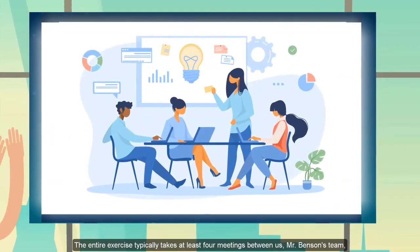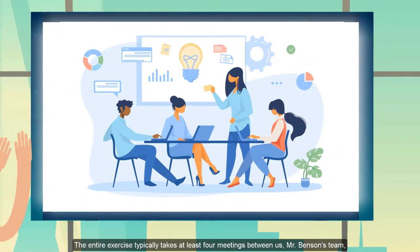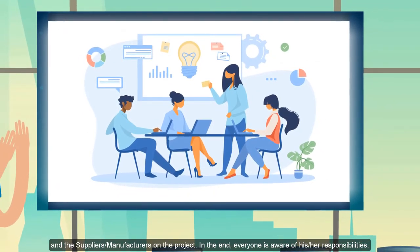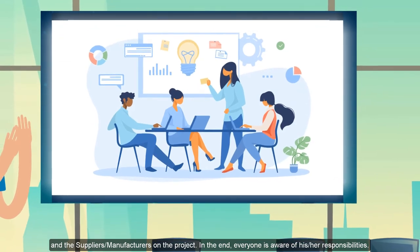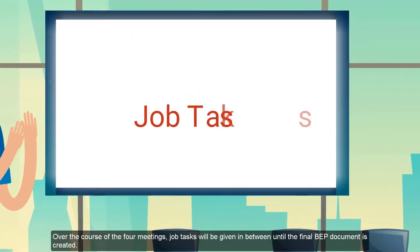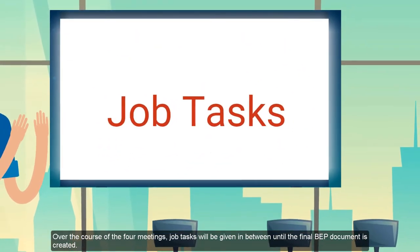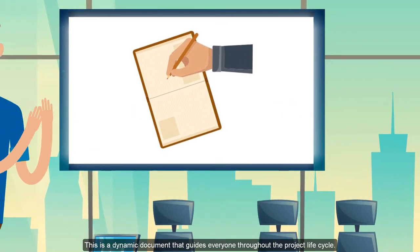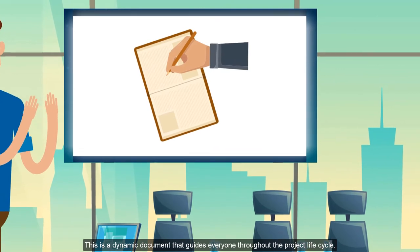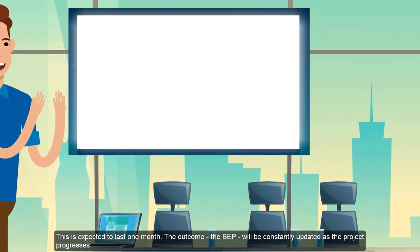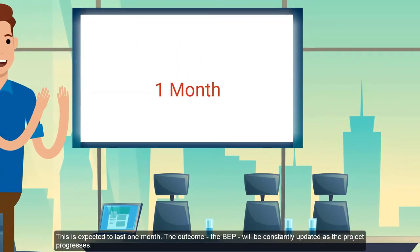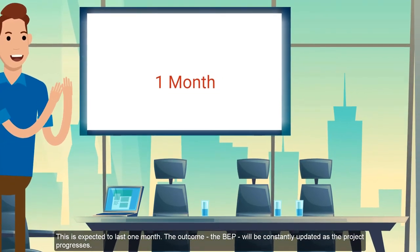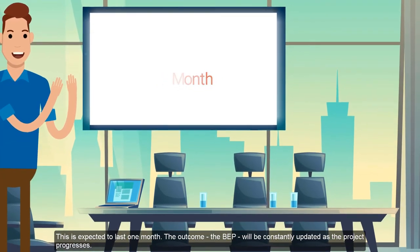This typically takes at least four meetings between us, the services team, and also the suppliers and manufacturers of the project, so that everyone is aware of their responsibilities. Over the course of these four meetings, there will be job tasks defined until the final implementation plan is created. This is a dynamic document that guides everybody all through the process, and is expected to last for at least one month. The outcome is a dynamic document that is updated as the project progresses.